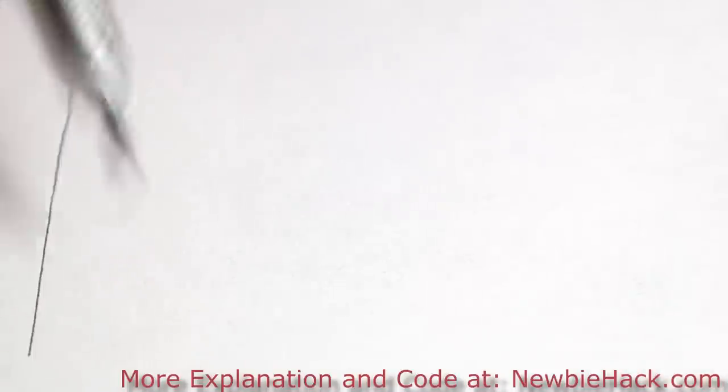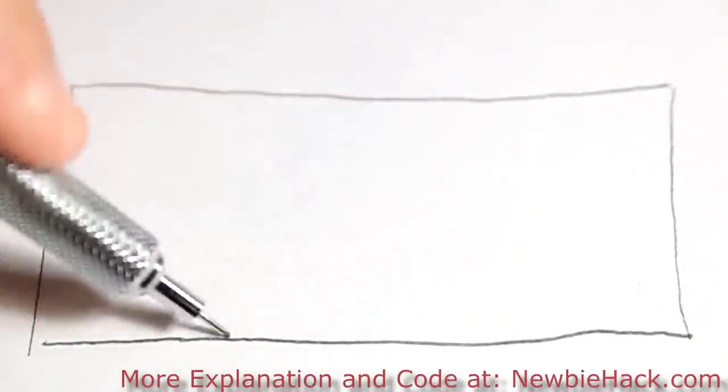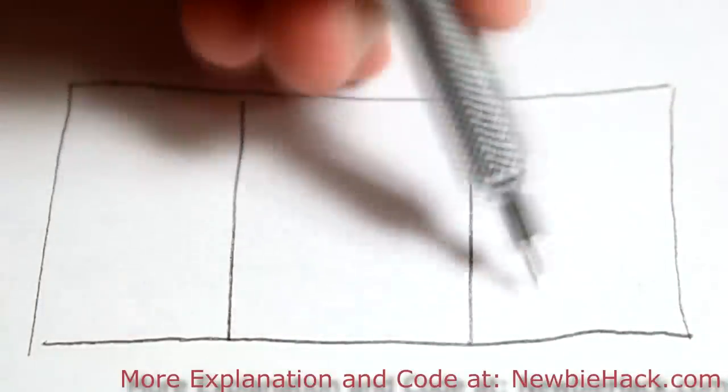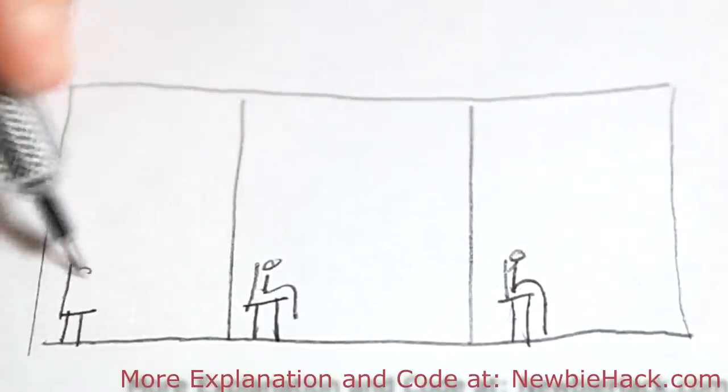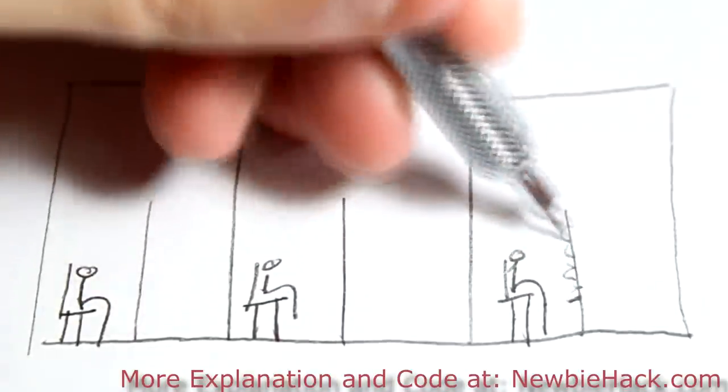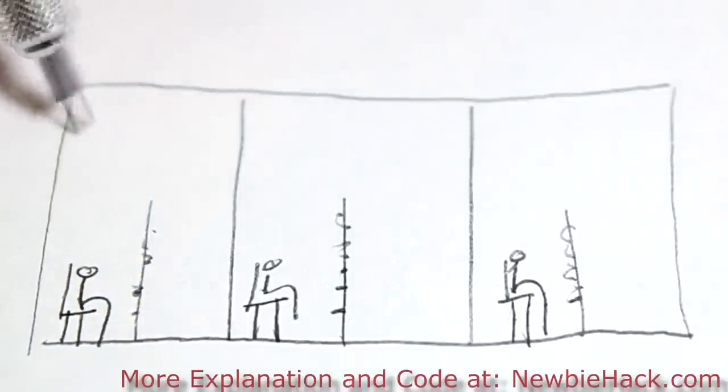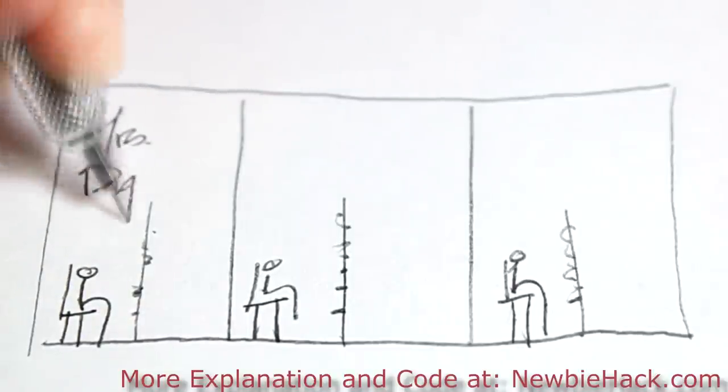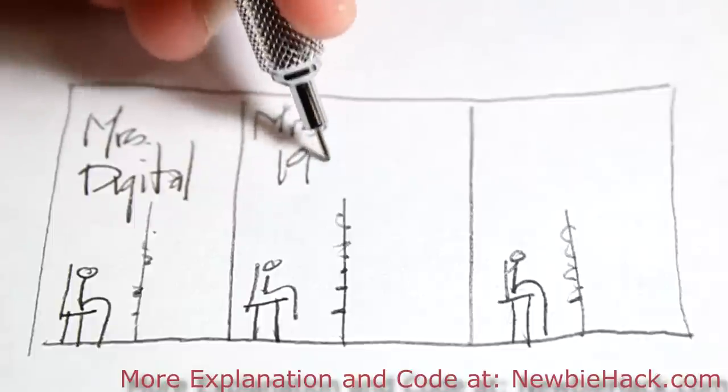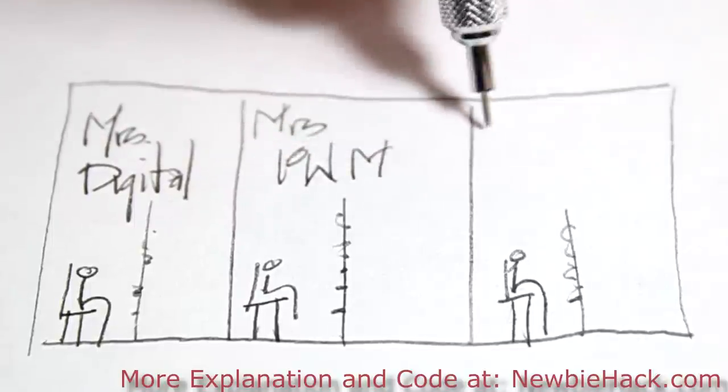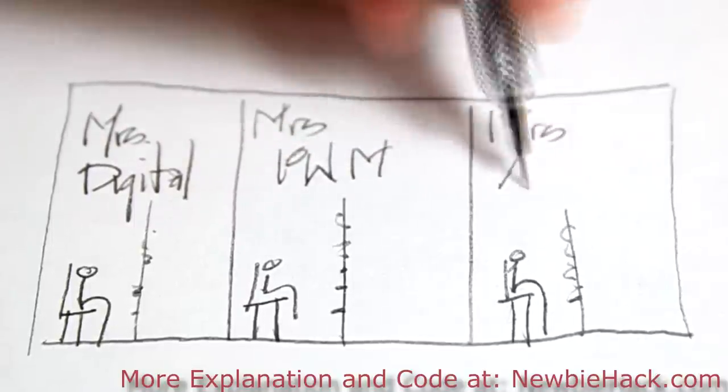In the microcontroller, there are three ladies. And they're sitting in their chair. And they have a switchboard. This is Mrs. Digital. And this is Mrs. PWM. And this is Mrs. ADC.